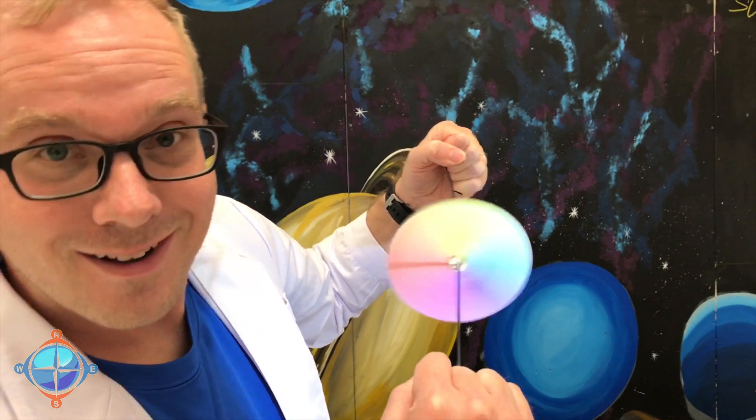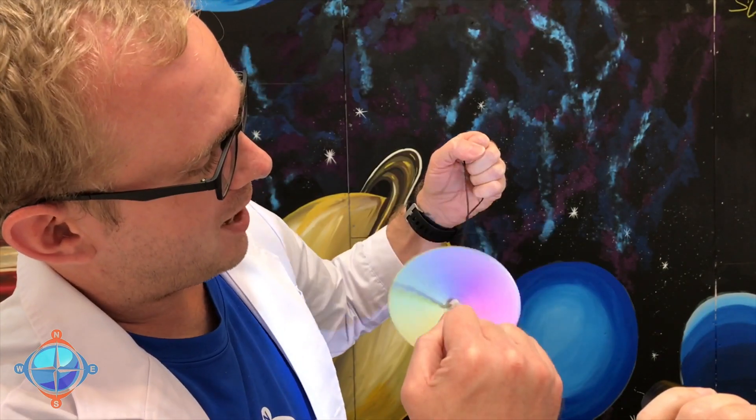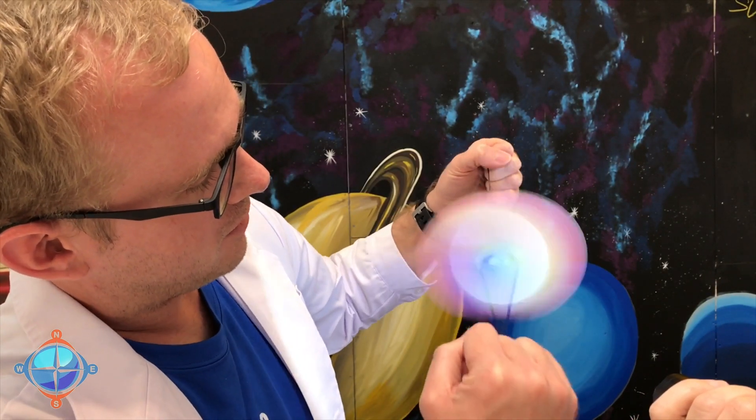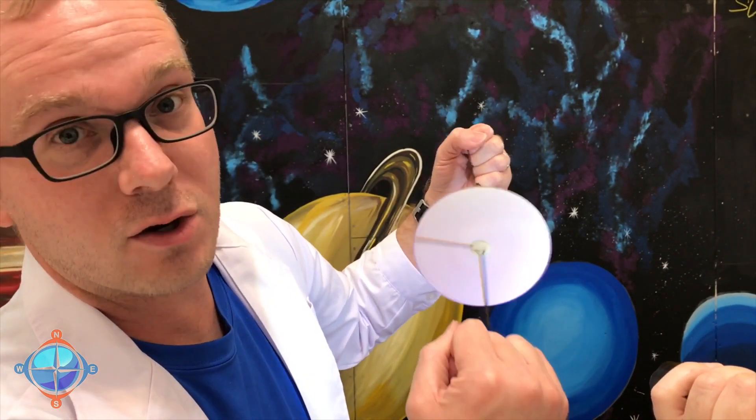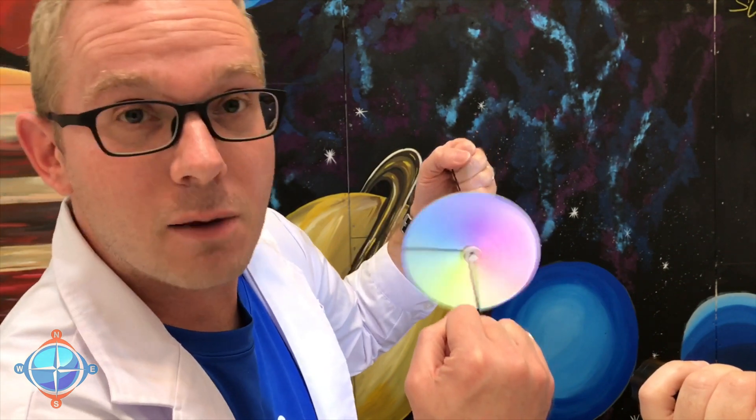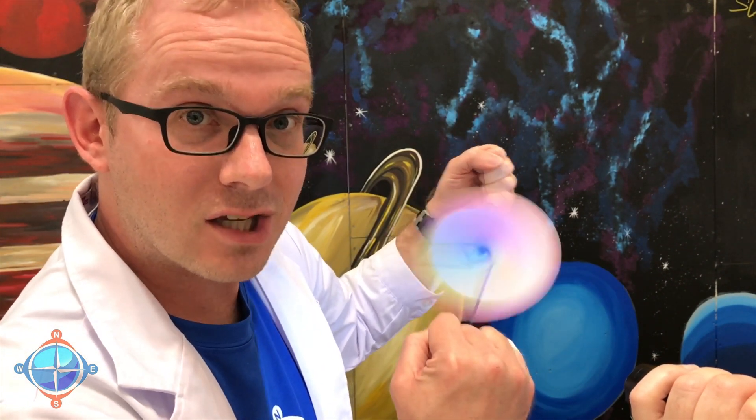Wow! Look at that! When all the colors reflect into our eyes at the same time, we don't see red or yellow or green, but we see them all. And that is the color white.